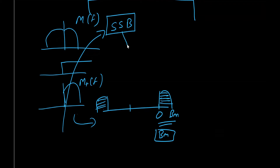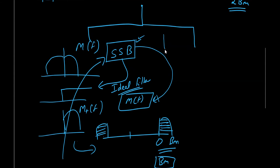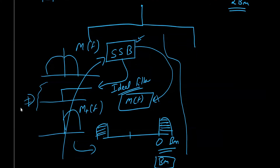However, single sideband requires an ideal filter, and it depends on the characteristics of the message signal itself — what kind of message signal determines whether we can apply SSB or not. Single sideband looks promising but is not the solution in most cases. We cannot create an ideal filter, so we cannot fully recreate single sideband. Therefore, we look into alternate solutions — specifically, multiplexing.